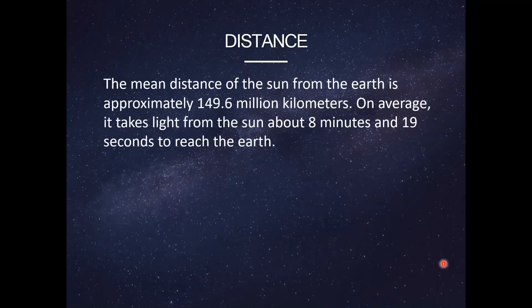Distance: the mean distance of the Sun from the Earth is approximately 149.6 million kilometers. On average, it takes light from the Sun about 8 minutes and 19 seconds to reach the Earth.